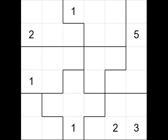Grids in SUGURU can be any size. In this example, I have chosen a 6x6 grid. You will notice that the cells are divided into containers or groups, shown with these darkened borders. Each group may consist of 1 to 5 cells.